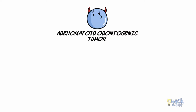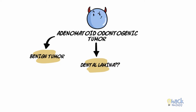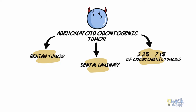Adenomatoid odontogenic tumour is a benign tumour of odontogenic origin that is thought to arise from the remnants of the dental lamina. It represents around 2.2% to 7.1% of all odontogenic tumours and is believed to be the fourth most common odontogenic tumour.